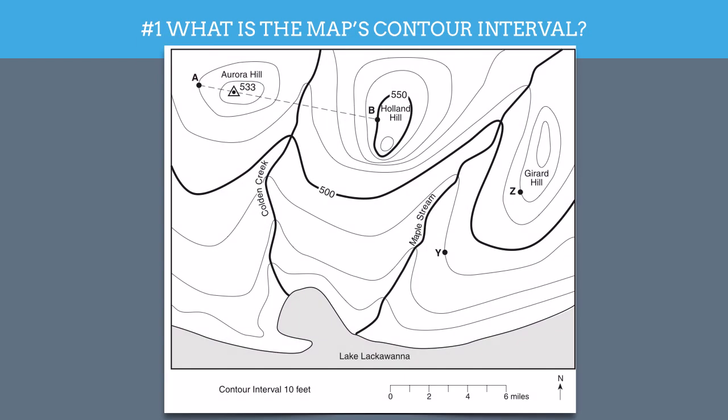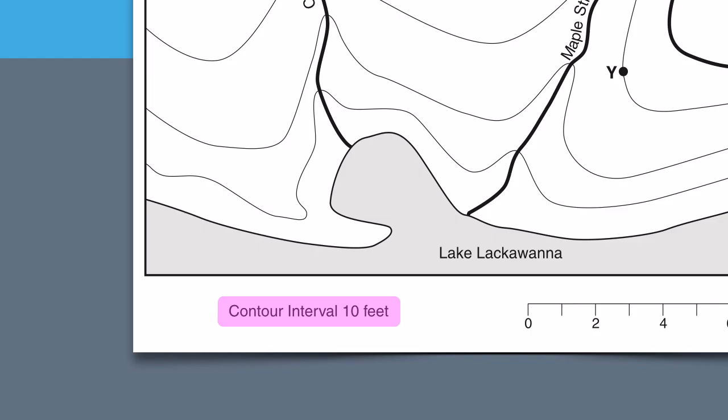Now, on most maps, the contour interval will be labeled. For example, on this map, the contour interval is 10 feet, and it's labeled for you right there on the bottom.